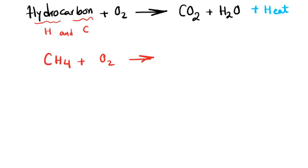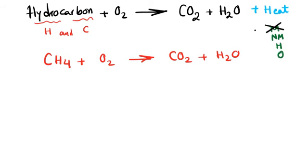CH4 plus O2 gives CO2 and H2O. When balancing, remember our methodology: metals, nonmetals, hydrogen, oxygen. There are no metals in this reaction, so we start with the nonmetal — carbon. One carbon on each side. Then hydrogen: four on the left, two on the right, so we multiply by two.